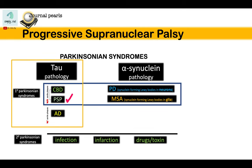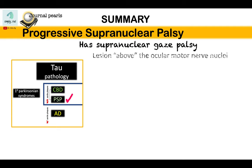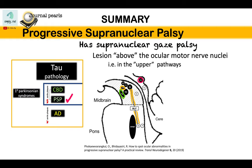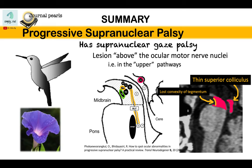In summary, progressive supranuclear palsy is one of the primary parkinsonian syndromes caused by abnormal tau proteins. The term 'supranuclear' refers to a supranuclear gaze palsy, denoting a lesion in the pathways above the ocular motor nerve nuclei. Many of the structures involved are located in the midbrain, explaining what we see on imaging: the hummingbird sign and the morning glory sign. Thank you for listening, see you in the next video.